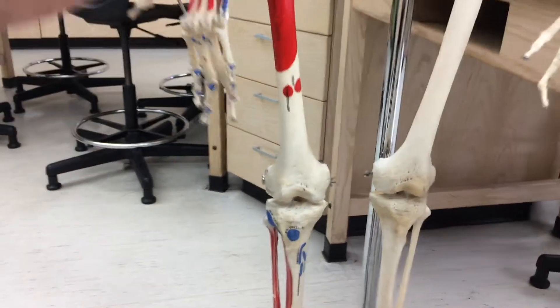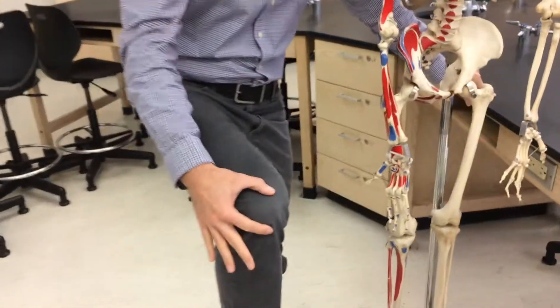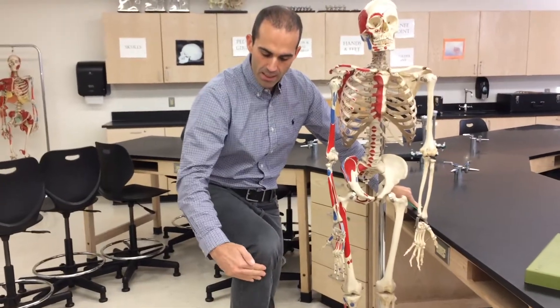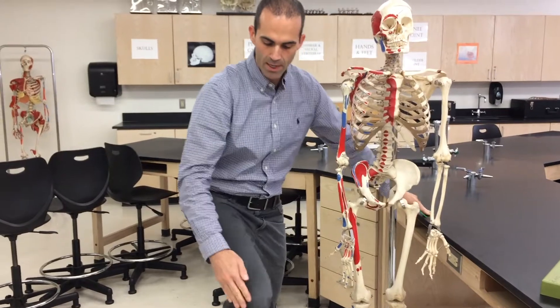That's the bump beneath your knee. So if you can palpate your kneecap, your patella, and you come just beneath that, you'll feel that tibial tuberosity.